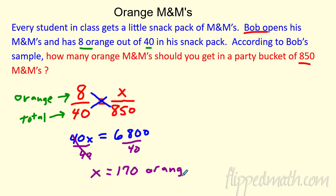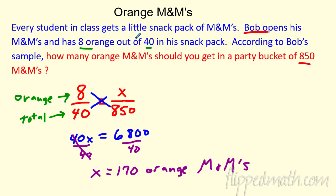Now, what's the bummer about this? Well, if Sally got 10 out of 40, we're going to get a different number. It's going to be totally different depending on whose snack pack you use. So we're going to talk about ways we can get good samples for the whole party bucket.